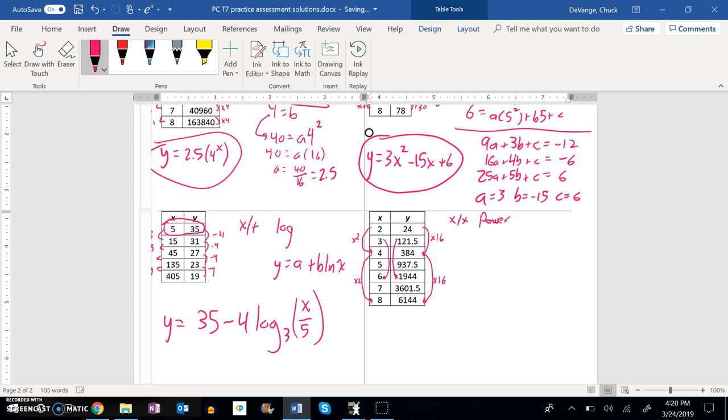So I know the model for power is y equals a times x to the sum power. So let me plug in some values and see what I can do. I'll just grab this second point here. When y is 121.5, x is 3.